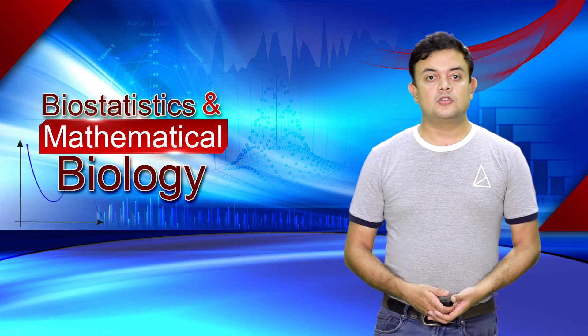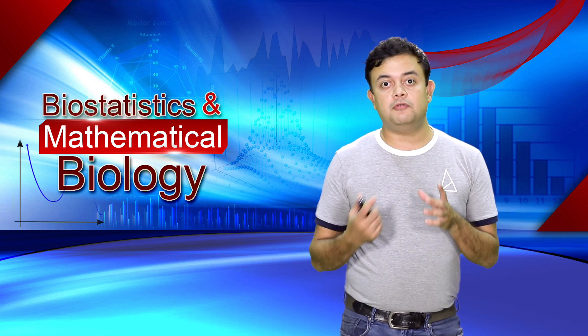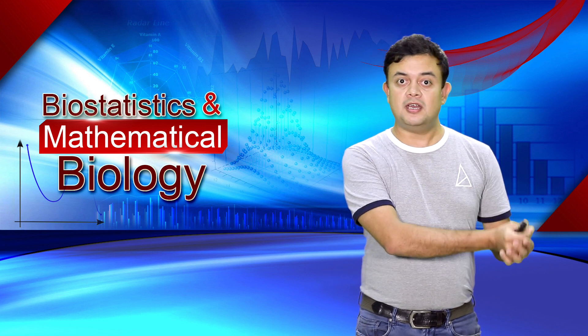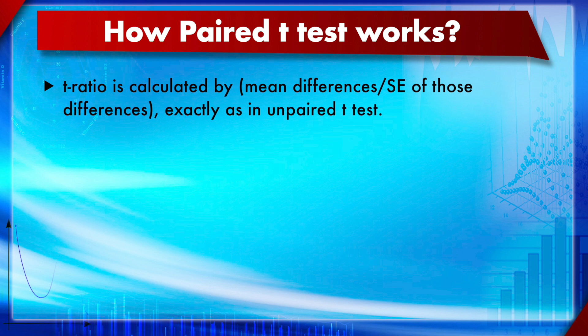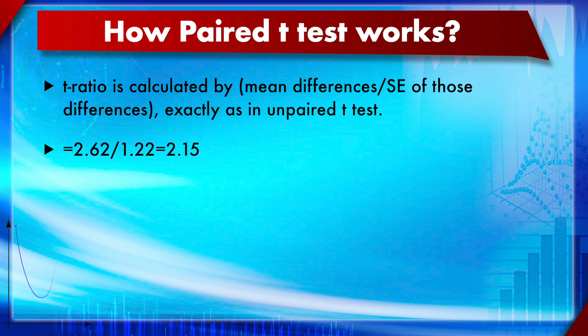Now, performing the paired t-test — though not strictly required if you already have the CI — the t-ratio is calculated the same way as for the independent t-test. The t-ratio = mean difference / standard error of the differences. We already calculated the standard error of the differences as the denominator when computing the 95% CI. So t = 2.62 / 1.22 = 2.15. This is the obtained t-ratio.